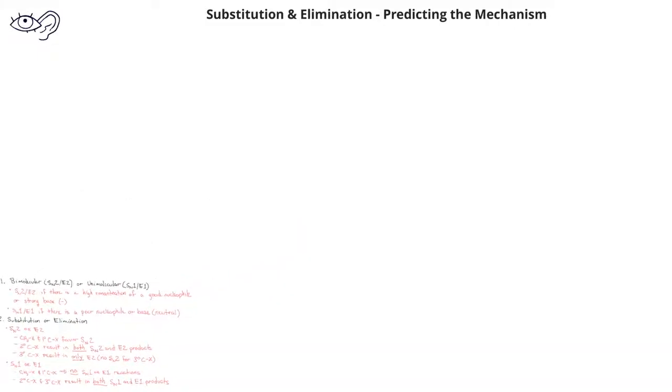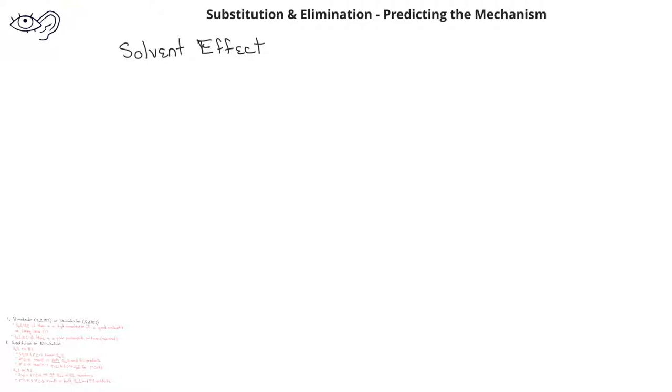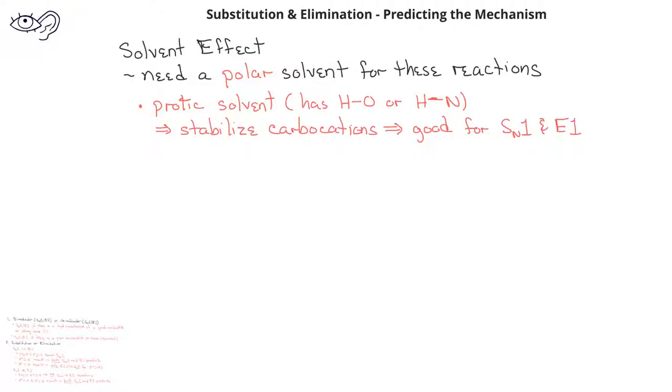Another factor to consider is what's known as the solvent effect. For all of these elimination or substitution reactions, we need to carry them out in a solvent that is polar. If the polar solvent is what's known as a protic solvent, in other words, if there is a hydrogen bonded to either an oxygen or a nitrogen, those kind of solvents stabilize carbocations, and so polar protic solvents are good for either SN1 or E1 reactions.